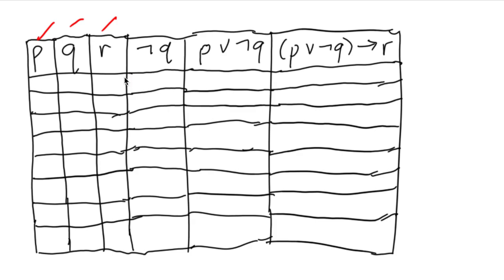Why do we have eight rows? Because we need to consider all combinations of three variables — not just two. We need combinations like T,T,T then T,T,F then T,F,T then T,F,F, and so on.